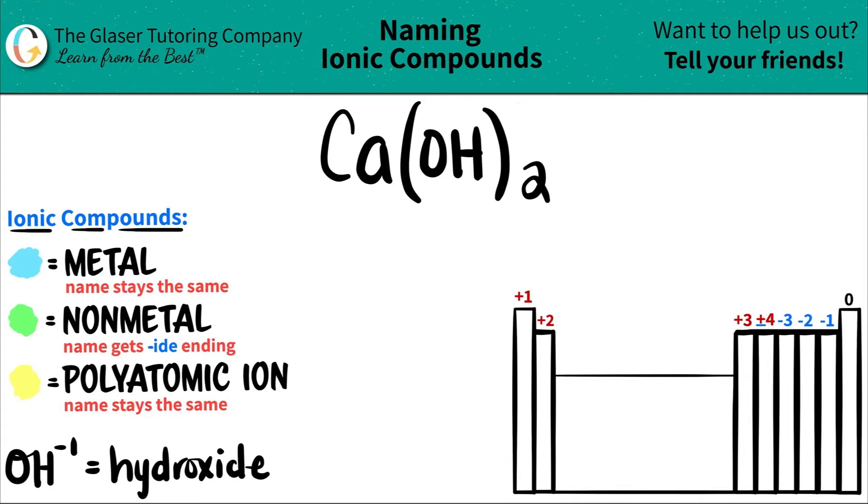So it's best to identify the polyatomic ion and then go from there. In this case, we do have the three elements. We have Ca, which is calcium, O for oxygen, and H for hydrogen.